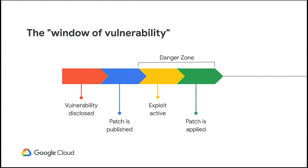Starting with the idea of a zero day. Why is a zero day so bad? Typically you have a window of vulnerability — a vulnerability is disclosed, like Spectre or Meltdown, a patch comes out, and that's where the danger zone begins. Everyone knows it's exploitable, but ideally you patch quickly enough that the window of vulnerability is relatively small.